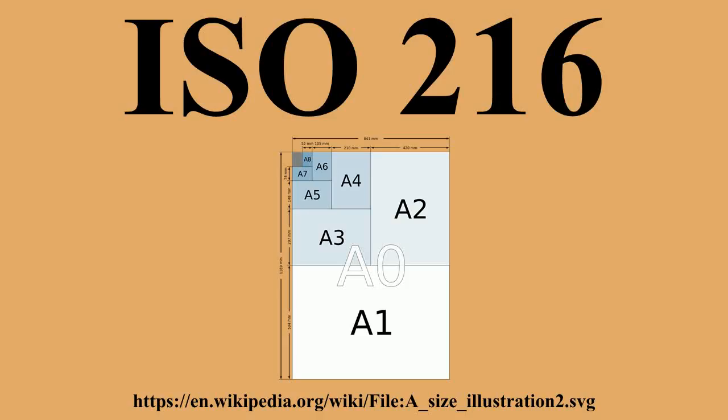Rectangular paper with an aspect ratio of √2 has the unique property that when cut or folded in half midway between its shorter sides, each half has the same √2 aspect ratio and half the area of the whole sheet. Equivalently, if one lays two same-sized sheets with an aspect ratio of √2 side by side along the longer side, they form a larger rectangle with the aspect ratio of √2 and double the area of each individual sheet. In each series of sizes, the largest size is numbered 0, and each successive size has half the area of the preceding sheet and can be cut by halving the length of the preceding size sheet.